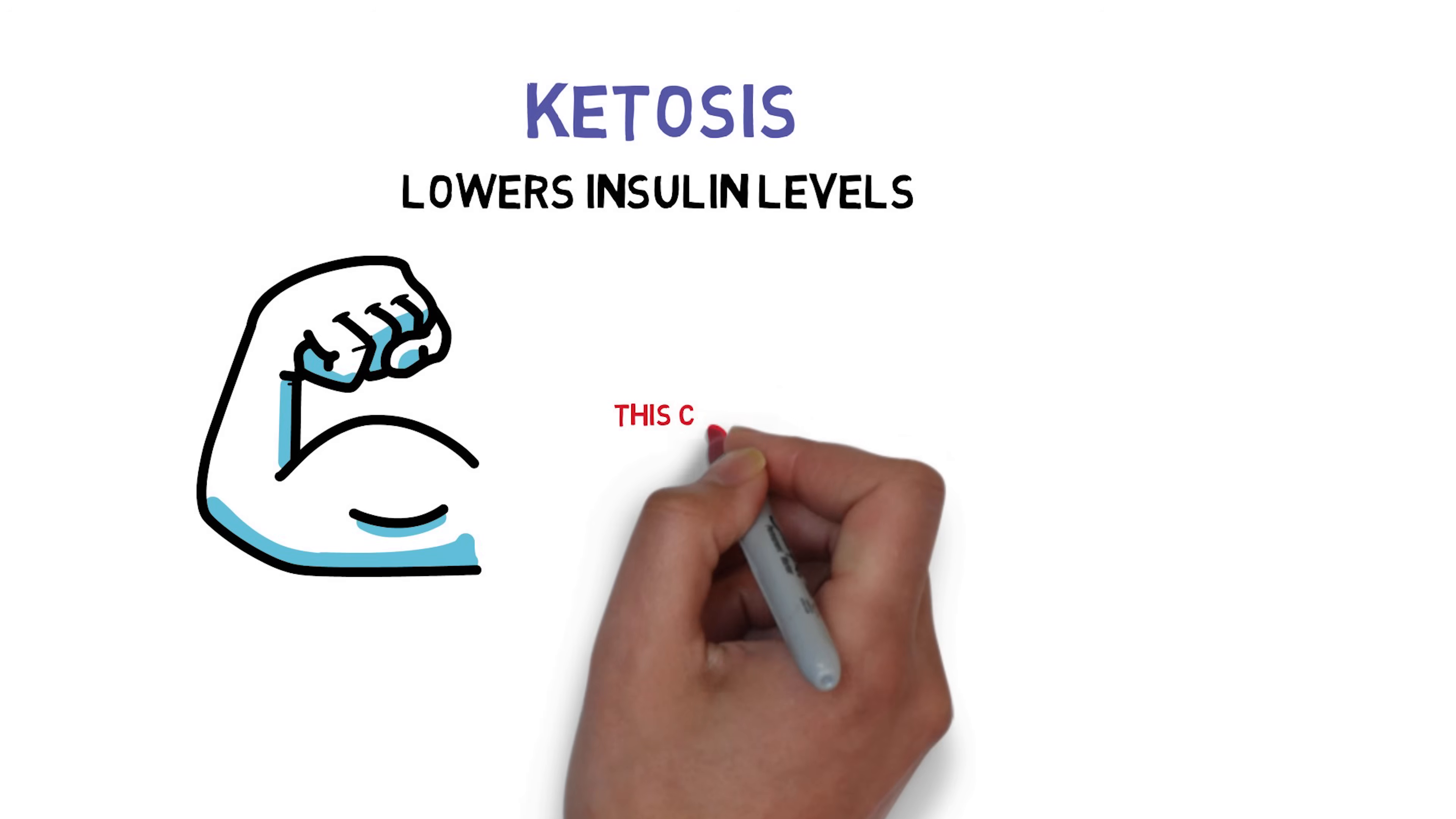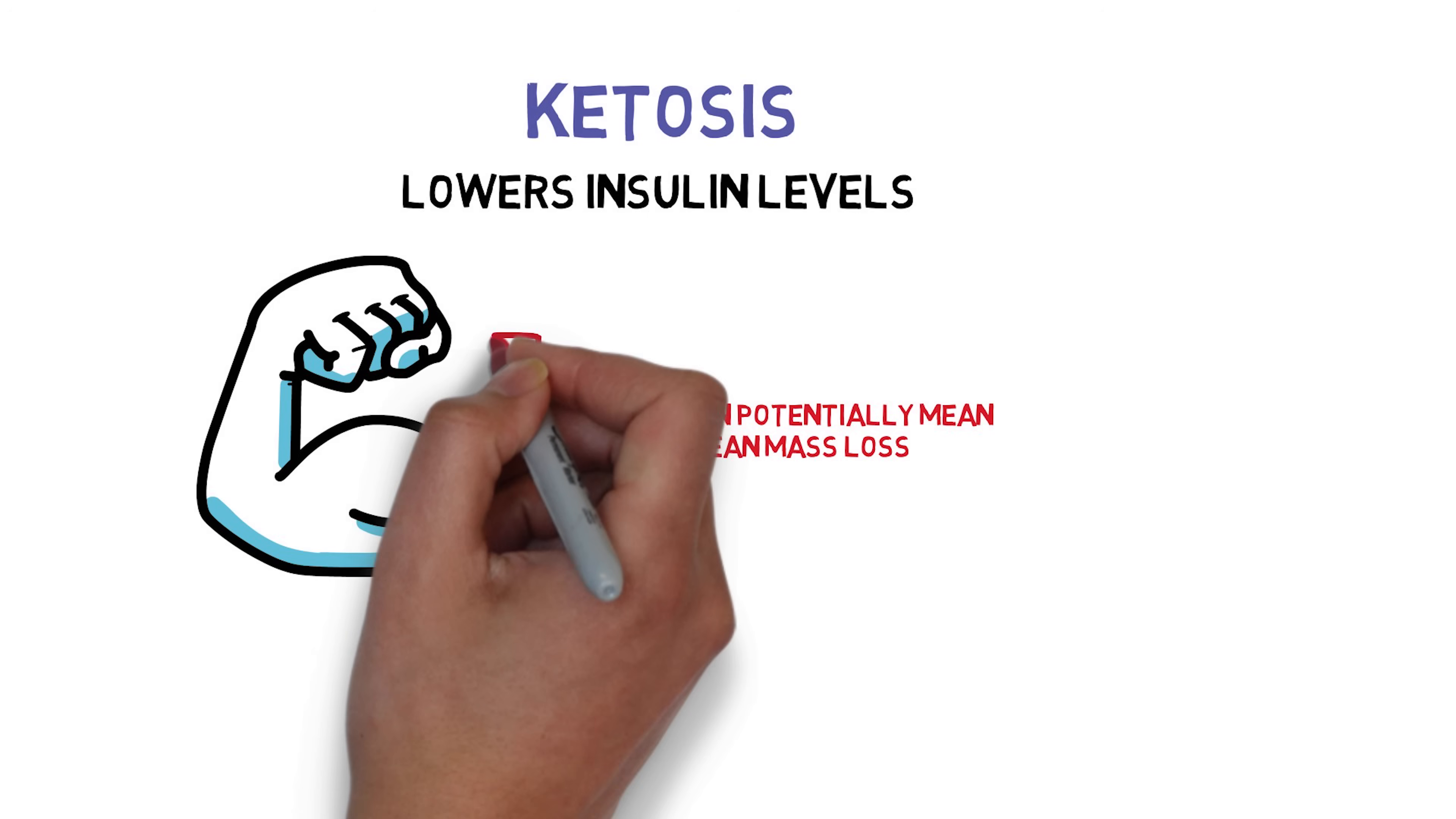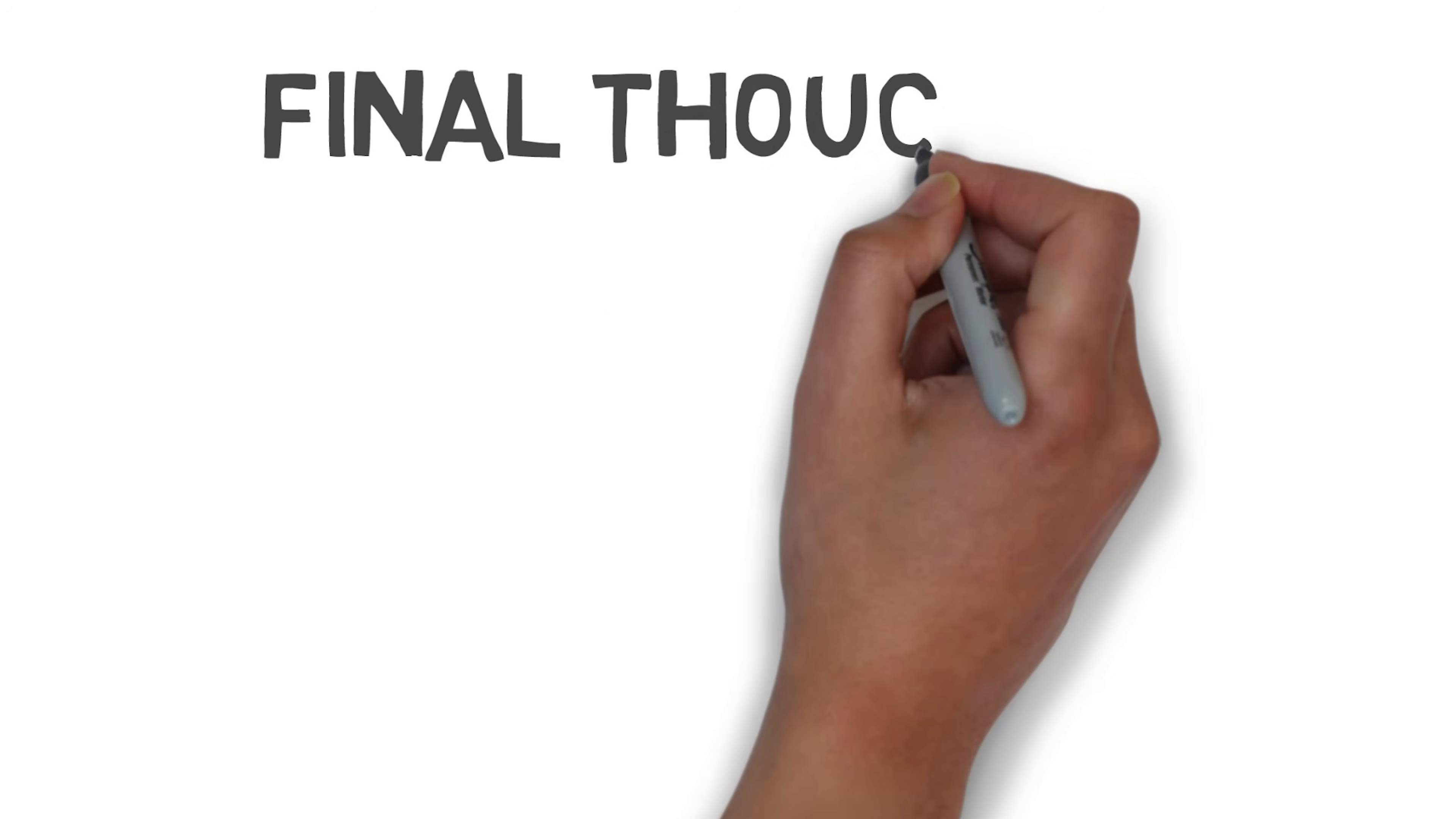Also, ketosis reduces insulin levels, and insulin is well known to suppress proteolysis, which is the breakdown of proteins into smaller peptides. This coincides with the metabolic ward study I mentioned. In it, subjects saw a greater loss of lean mass when following the ketogenic diet. This makes sense considering these amino acids can be used during gluconeogenesis, which we know the body does do during ketosis to produce that small amount of glucose we talked about.